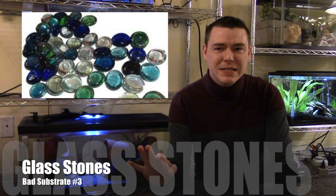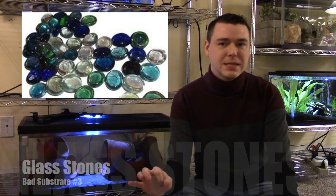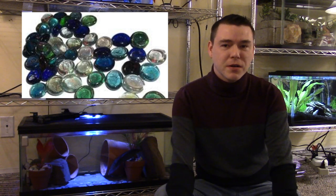Another bad substrate option for axolotls is these glass beads and plastic rocks that you'll see in pet stores that people often have in like a vase or something like that. They come in all different kinds of colors. Those are again bad. They can be ingested and they won't be able to be digested.